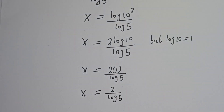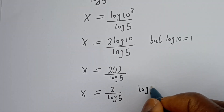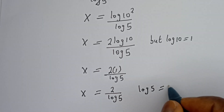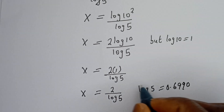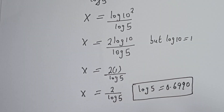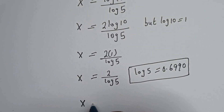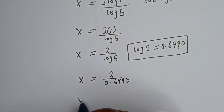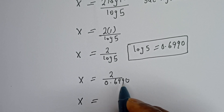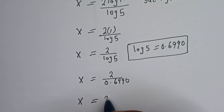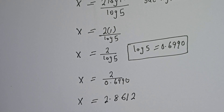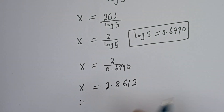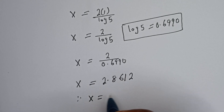So s is equal to 2 divided by log 5. Log 5 is 0.6990, so s is equal to 2 divided by 0.6990, which gives us 2.8612. Therefore our final answer is s is equal to 2.86.